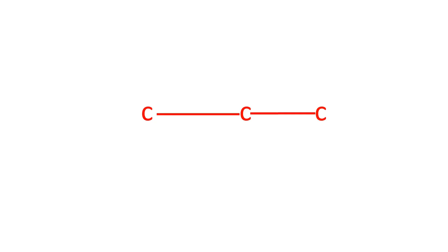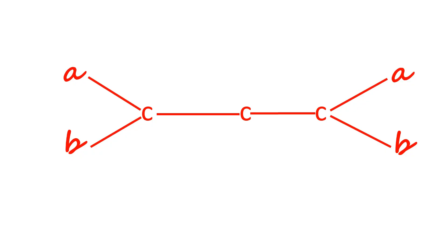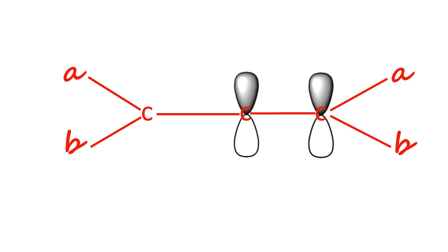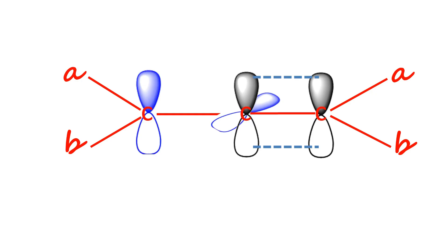Let me show you why the substituents on end carbons are in different planes which are orthogonal to each other. Consider these three carbons in the process of making an allene. The terminal carbons are sp2 hybridized, and the central carbon is sp hybridized. One of the sp2 hybridized orbitals forms a sigma bond with the central carbon; the other two sp2 hybridized orbitals form sigma bonds with the substituents. Both the terminal carbon and central carbon have unhybridized p orbitals. The p orbital on the right side terminal carbon overlaps sideways with the p orbital on the central carbon to form a pi bond. The central carbon has another unhybridized p orbital, but this one is perpendicular to the previous p orbital used for pi bond formation. The unhybridized p orbital on the left side terminal carbon must orient parallel to the p orbital on the central carbon — only then can a pi bond form.